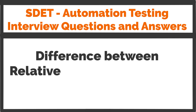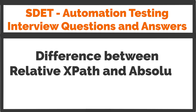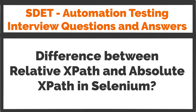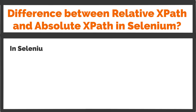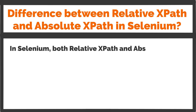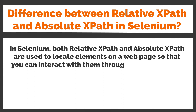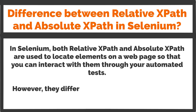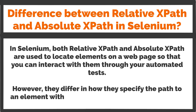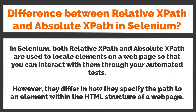Difference between relative path and absolute path in Selenium. In Selenium, both relative path and absolute path are used to locate elements on a web page so that you can interact with them through your automated tests. However, they differ in how they specify the path to an element within the HTML structure of a web page.